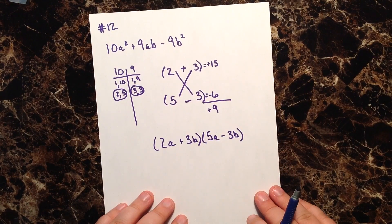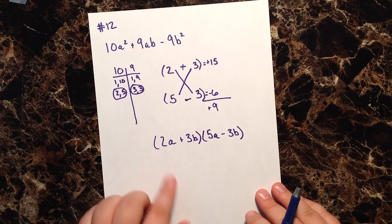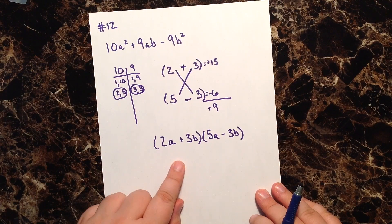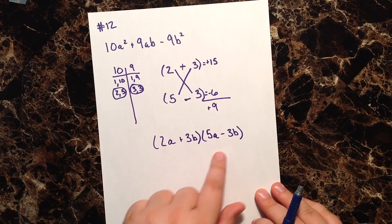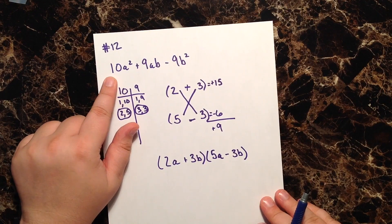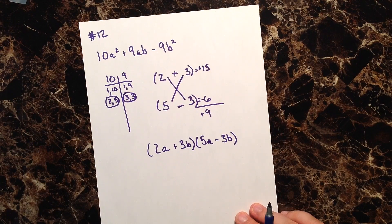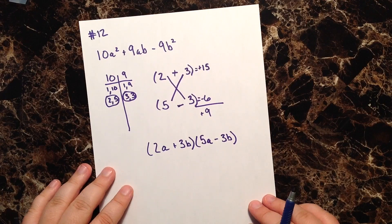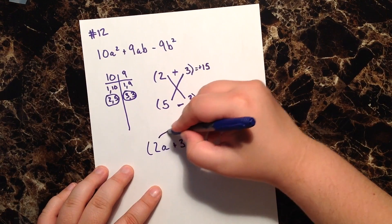So these are our factors, and when it comes time for the test, we can actually go back and check ourselves to make sure that this is, in fact, correct. And the way that we do that is we actually can foil these back out. And when we foil this back out, we should get back to our original trinomial. So for the sake of practice, let's go ahead and do that just to make sure that we have determined the proper factors.